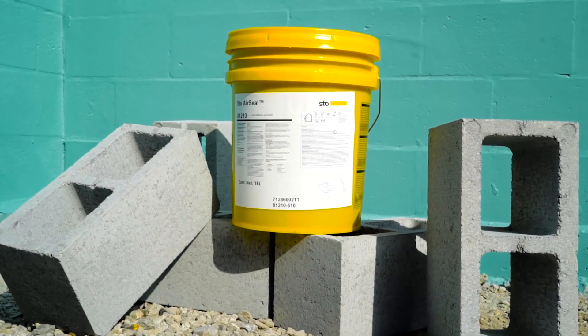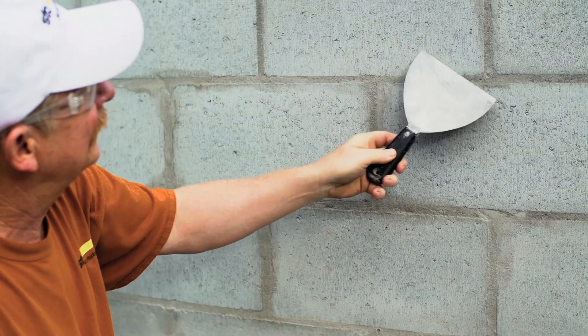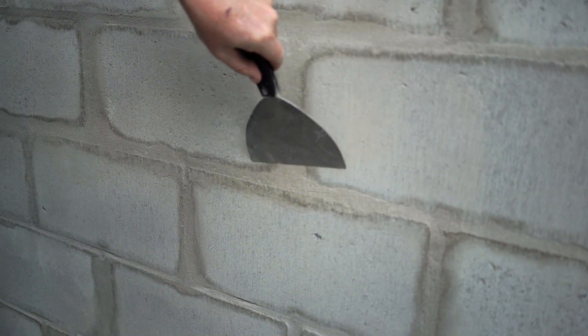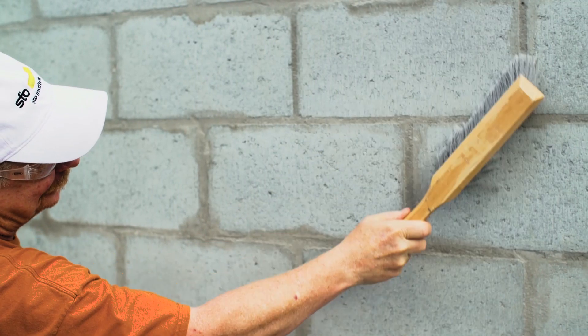Coming up, you'll learn how to properly apply StoGuard AirSeal. First, inspect the CMU substrate. Apply only to a fully cured, sound and clean, dry, properly prepared, frost-free surface.